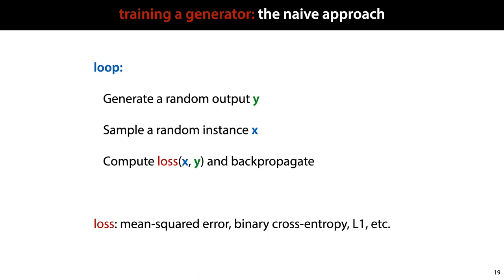So the big question now is given a generator network, how do we train it? Given some data, how do we set the weights of the network so that the outputs start to look like our examples? We'll start with what doesn't work. Here is a naive approach. We simply sample a random point, for instance a picture, from the data, and then sample a point from the model. We see how close they are, compute a loss between them, and we backpropagate. And for the loss, we can use anything like mean squared error or binary cross entropy.